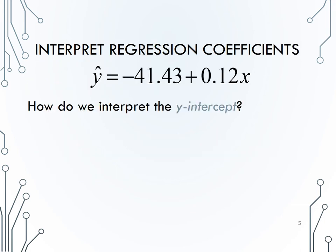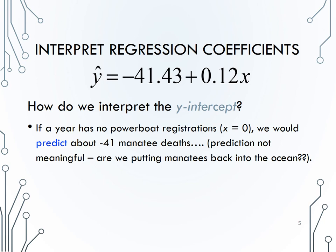Now let's interpret each of those values in our regression line, starting with the y-intercept. Again, pause the video, then play for the answer. The y-intercept is the estimated y-value when x is zero. In this context, if a year has zero powerboat registrations, we would estimate about negative 41 manatee deaths.